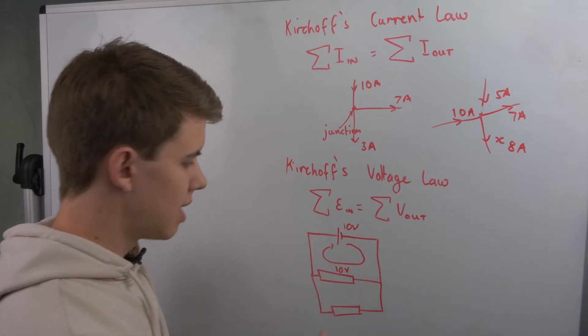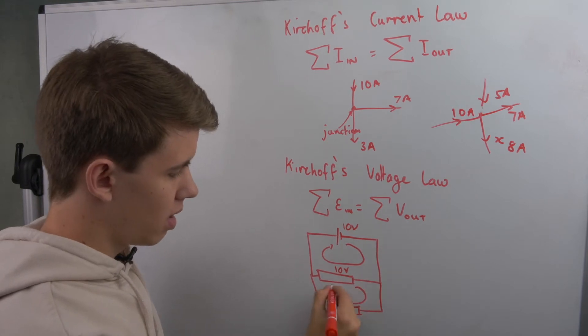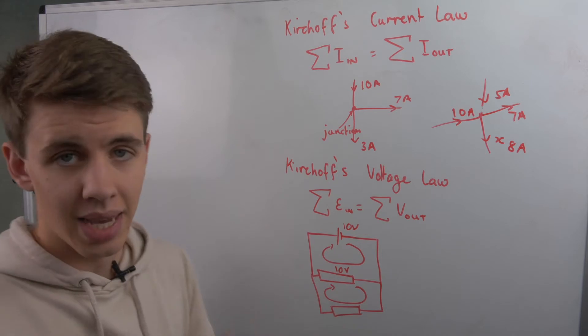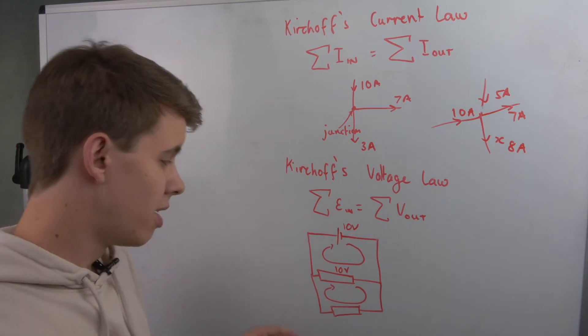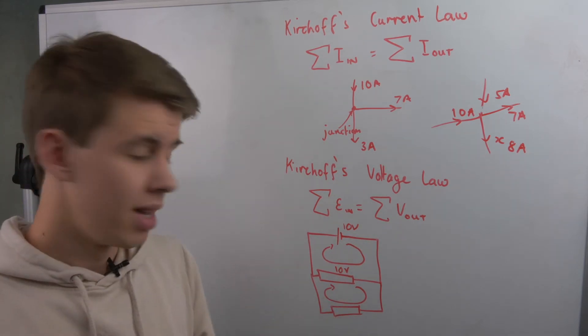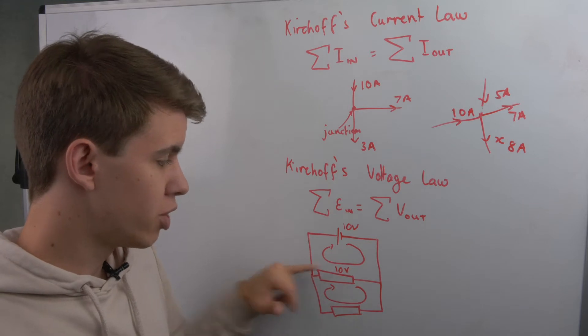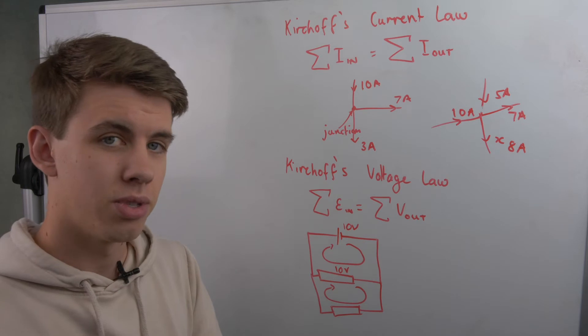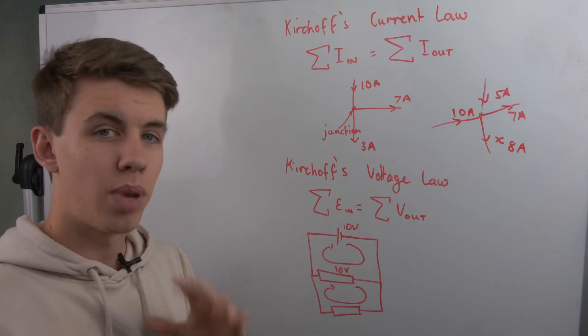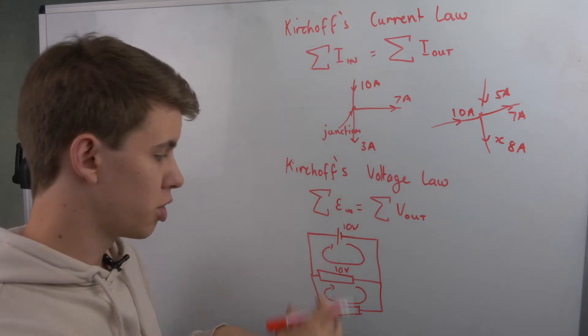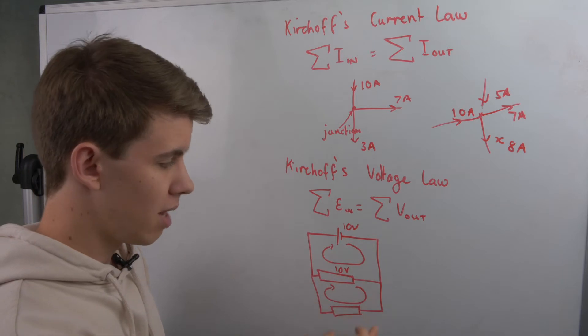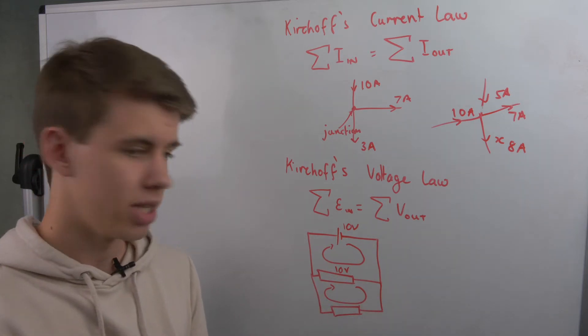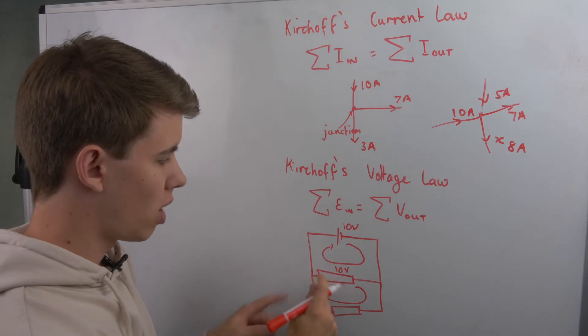Even in this second loop, we have to say that the total potential coming in has to equal the total potential coming out. The only tricky part here is that the current is going to travel in two different directions through these resistors, so you will have minus 10 volts through one resistor and plus 10 volts in the other resistor, because your total EMF in this loop is actually zero since there's no battery giving any energy into this one.